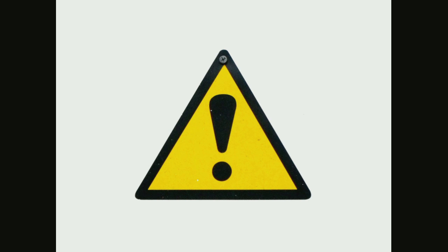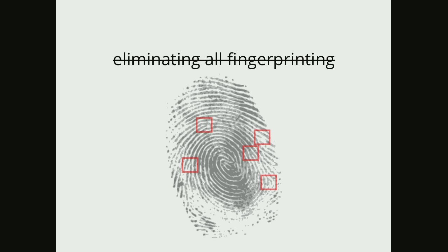A little bit of a warning: this talk is not going to teach you about eliminating all sources of fingerprinting. Fingerprinting is the ability to uniquely identify you without storing anything on your computer. The typical way that people track you online is with cookies — they set a unique identifier in your computer, and then your computer hands it over to websites as you visit them again. Fingerprinting doesn't work like that. You don't need to store anything on the browser; you just look at characteristics of the browser.